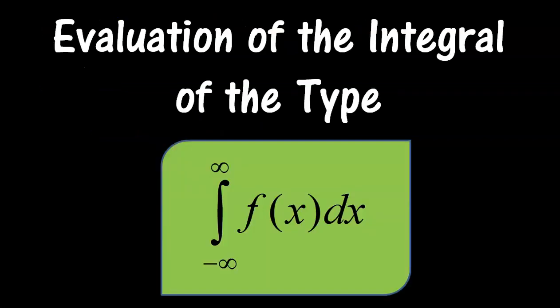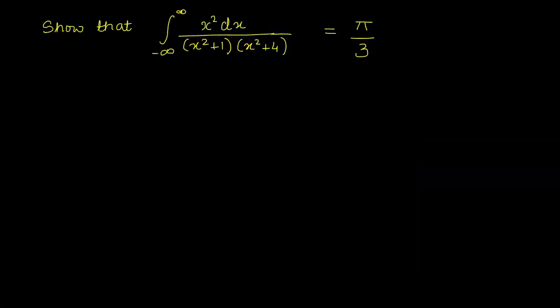Hello students, welcome back. In the previous video, we saw how to evaluate integrals of the type integral from minus infinity to plus infinity fx dx. Today we are going to solve a question based on this. The question is: show that integral from minus infinity to plus infinity x squared dx upon x squared plus 1 into x squared plus 4 is equal to pi upon 3.